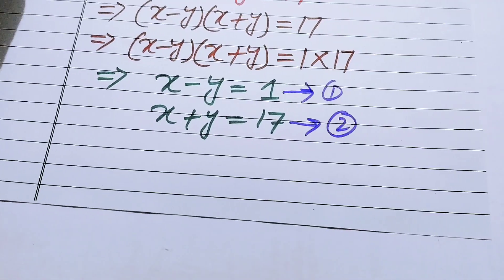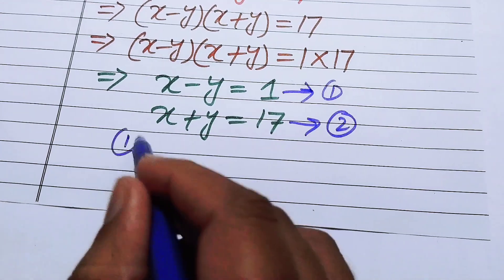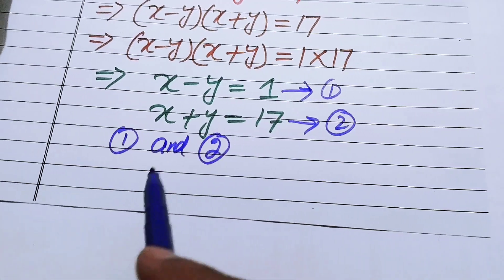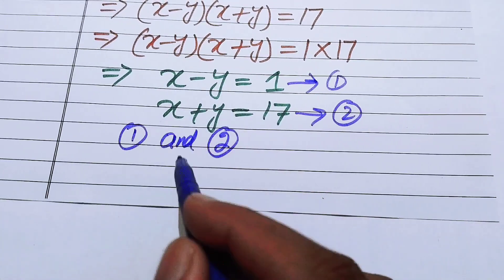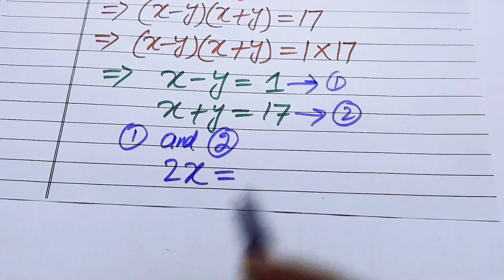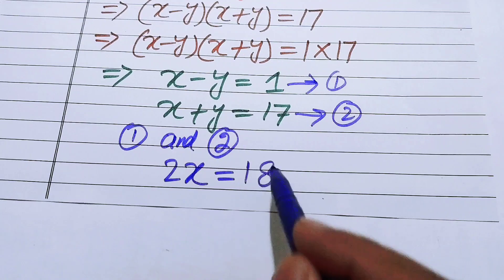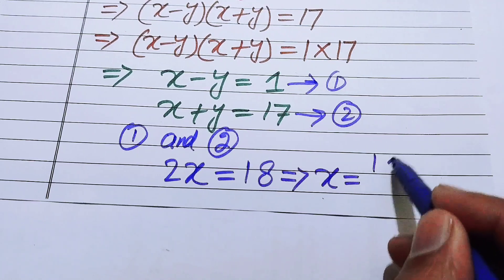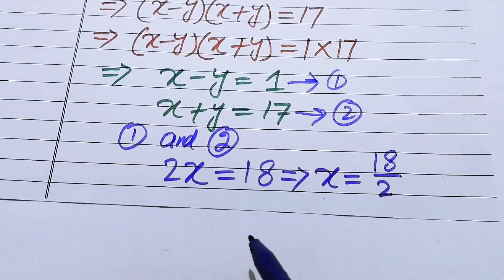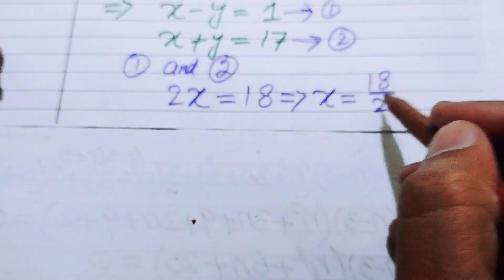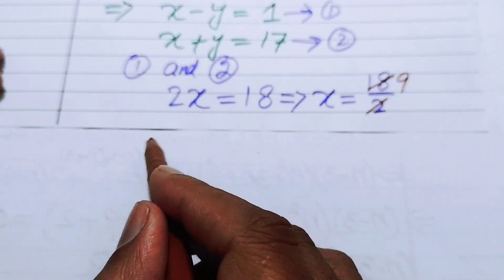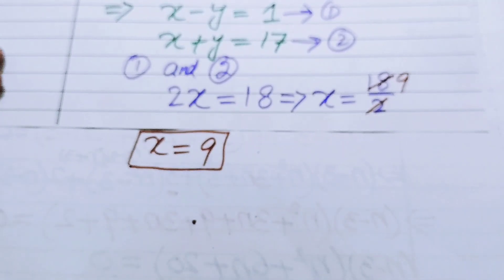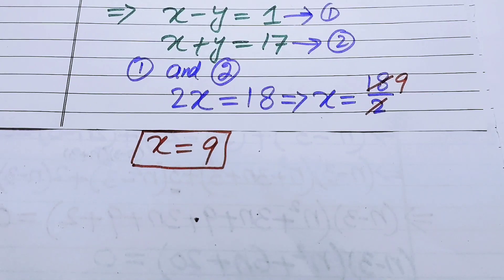Adding equation 1 and equation 2, the y terms cancel and we get 2x equals 1 plus 17, which is 18. Moving the 2 to the right-hand side, x equals 18 over 2. Since 18 over 2 equals 9, we get x equals 9.